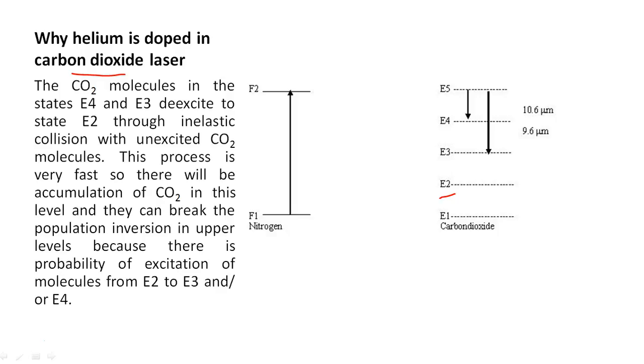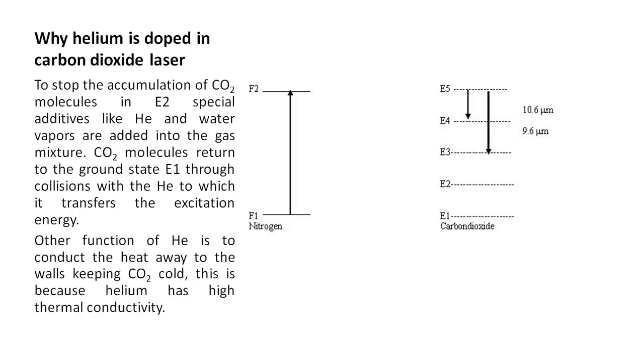This can break the population inversion in upper levels because there is probability of excitation of molecules from E2 to E3 or E4. But we want the transition from E5 to E4 in the downward direction. To stop the accumulation of CO2 molecules in E2, special additives like helium and water vapors are added into the gas mixture.